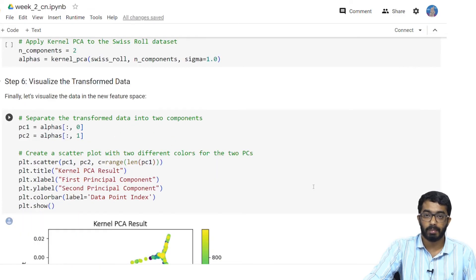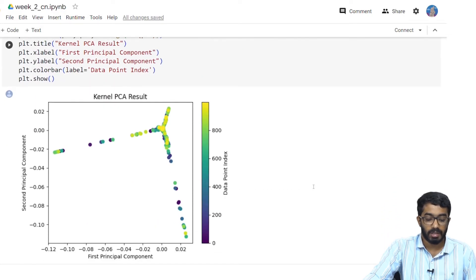Let us try to represent how our new PCs look like. So the kernel PCA plot is given by this plot and as you can see we have somewhat found a linear mapping for our Swiss roll data set.